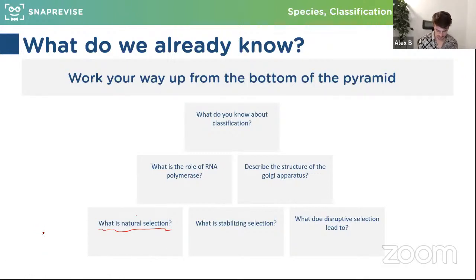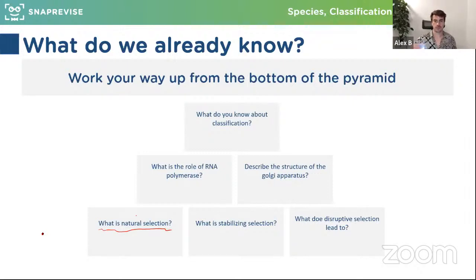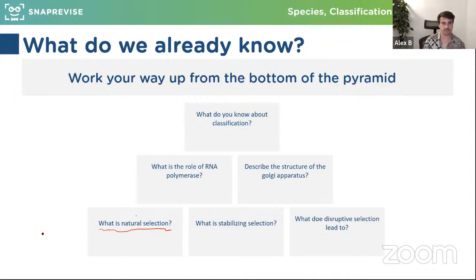Encourage you to engage with these questions. First question: what is natural selection? This is actually quite a long answer — you normally do this for a four or five mark question. Try and summarize it as concisely as you can; we'll probably put a couple of bullet points for this.